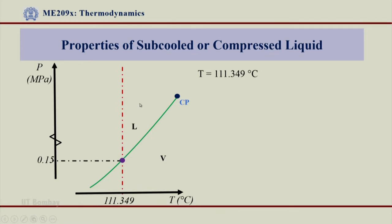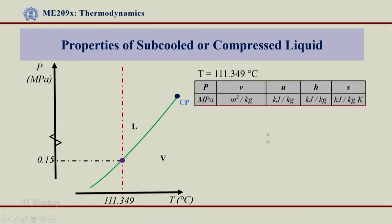Now I am going to compress this liquid further and further and see the effect of increased pressure. I can go from 0.15 to 0.2, 0.3, 1, 4, and beyond even the critical pressure, just to understand what happens to the properties of compressed or subcooled liquid and how they change. So let us look at this first point which is on the LV line — a saturated point — which is P-SAT. The properties we look at for all different pressures are specific volume, thermal energy, enthalpy, and entropy.